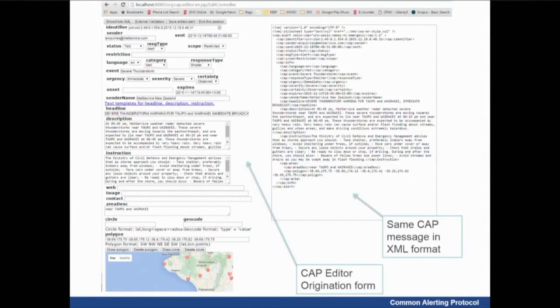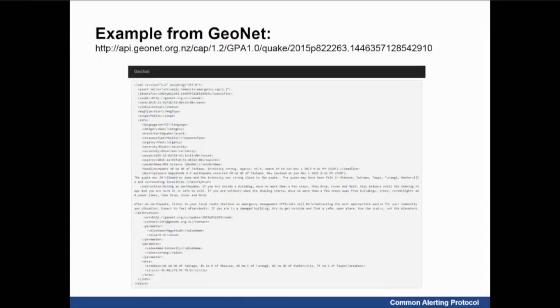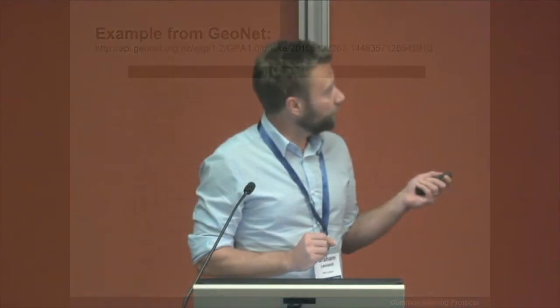Here's an example of a very simple CAP form on a web page and the XML it generates. You can see all those elements formulated into a severe thunderstorm message. You draw a polygon where it applies, validate it, and press send. This sits on a hub and all CAP-compliant alerting endpoints scrape it continuously, immediately processing and sending it out — maybe to a mobile device, maybe to a compliant siren system. At GeoNet, earthquake alerts are now fully available on CAP; any CAP endpoint can get earthquakes from the last seven days, constantly updated.